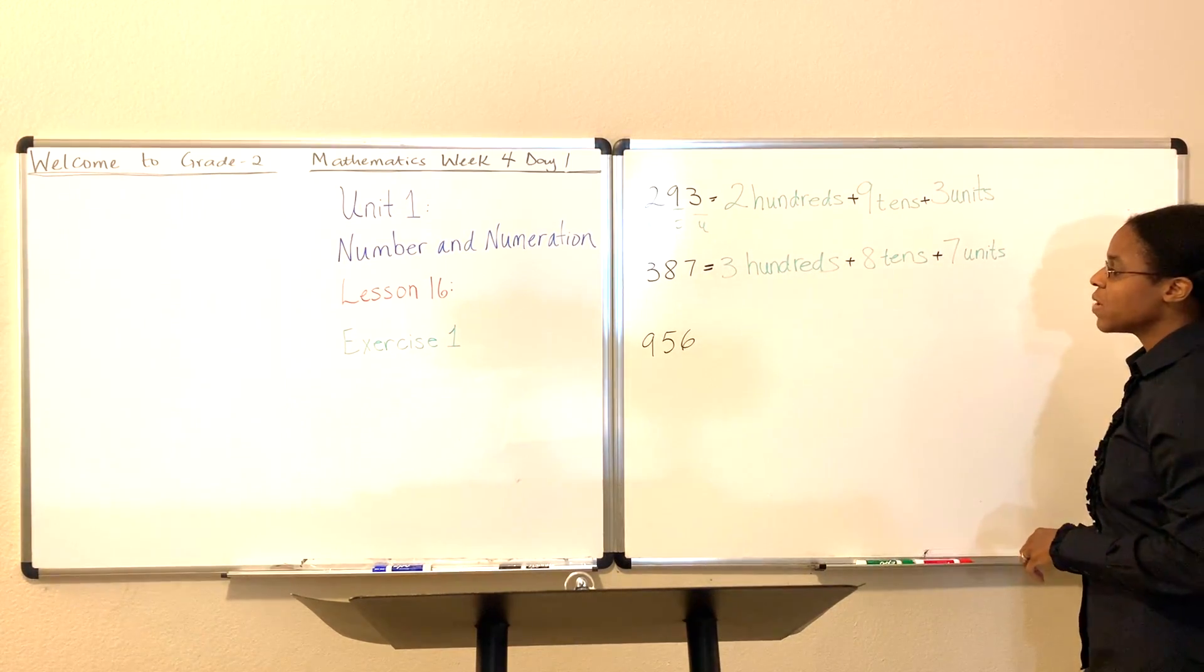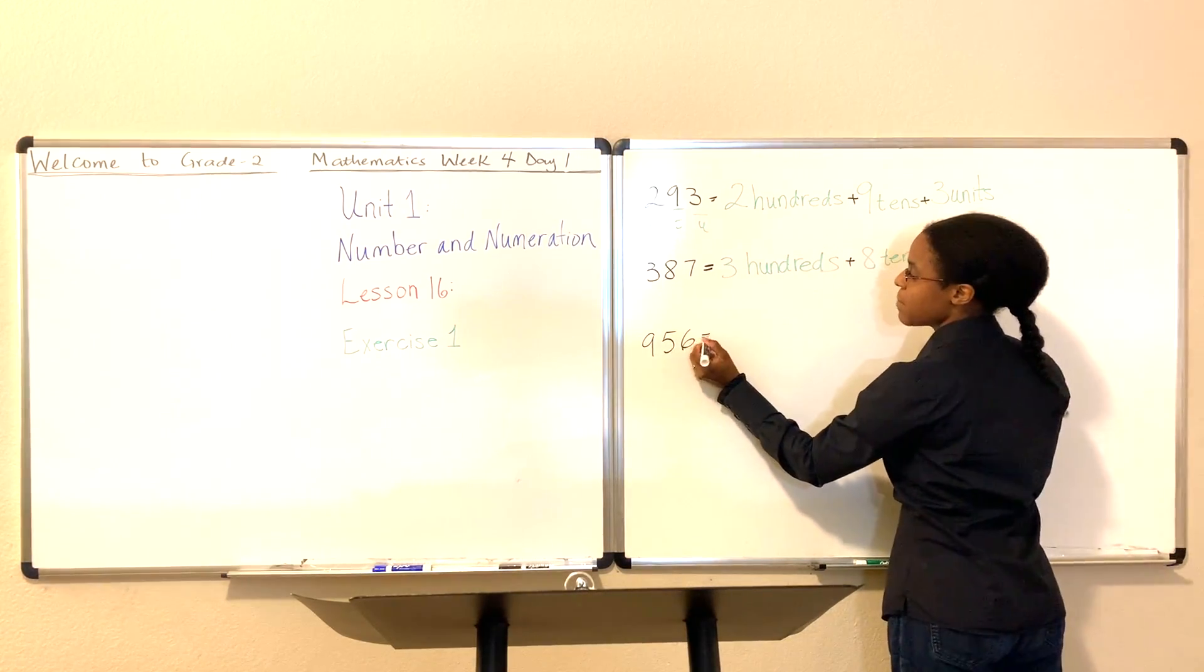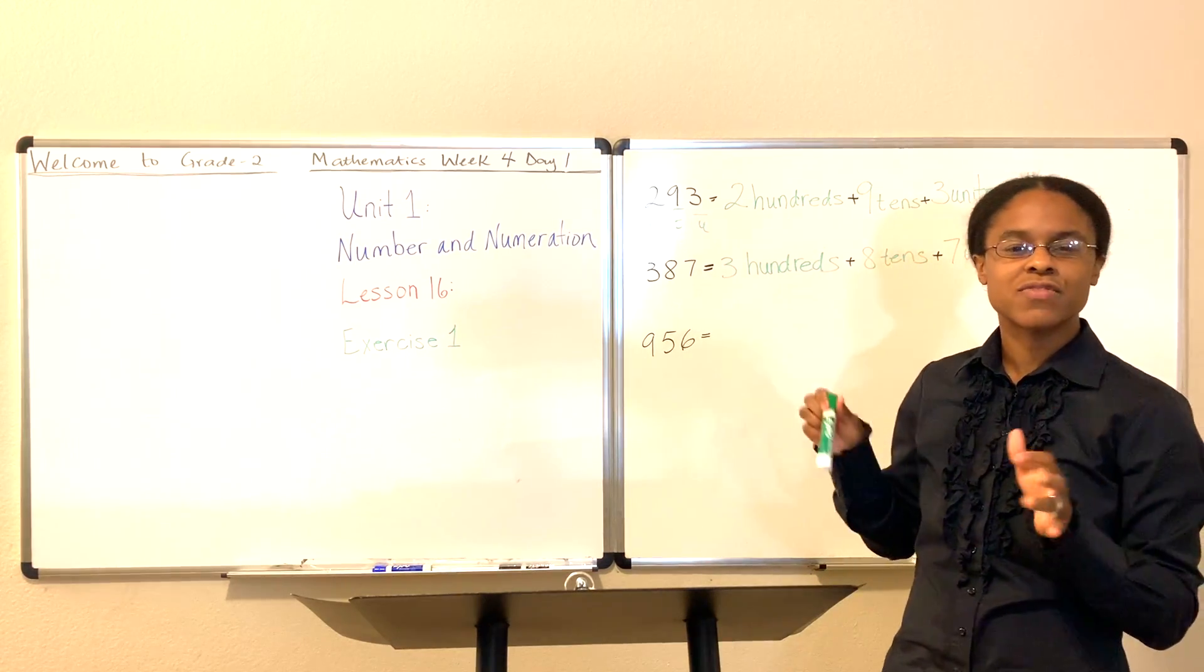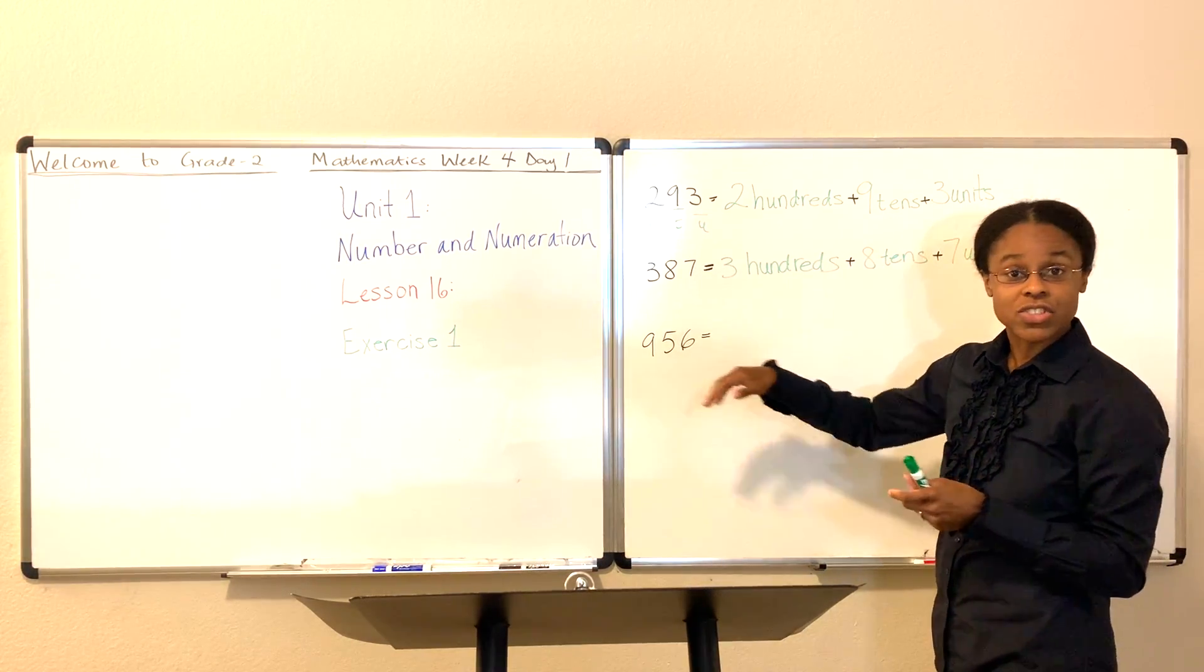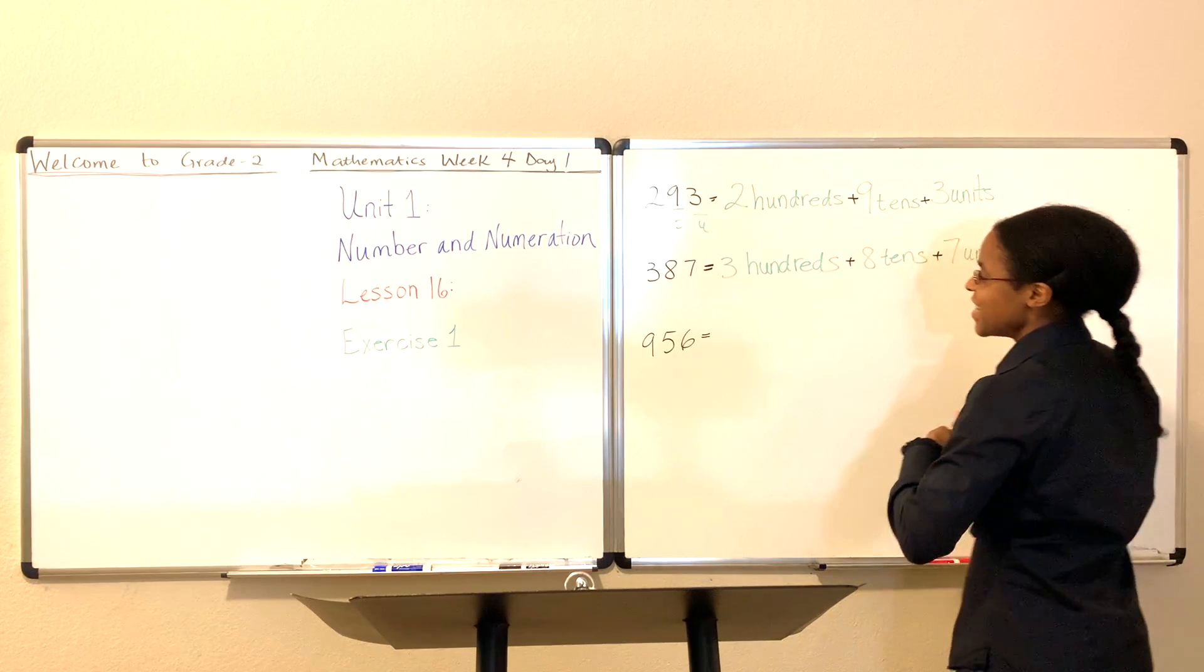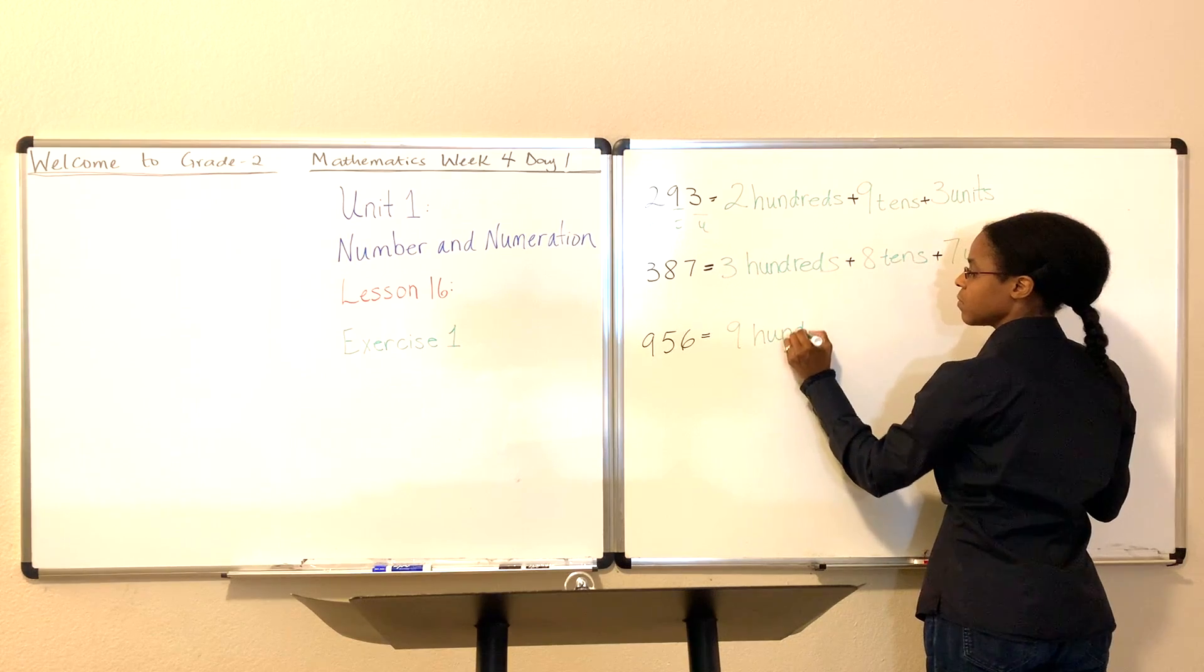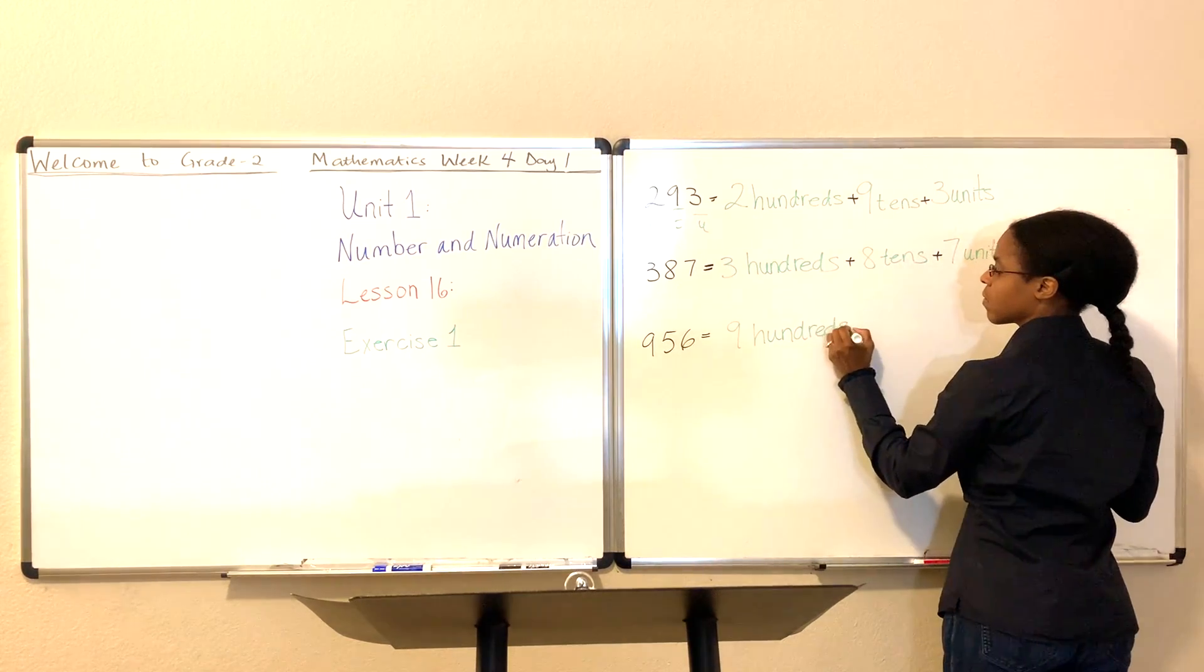Okay, let's look at the final ones for this lesson. We have the number 956. How many hundreds do we have in the number 956? Well, we have nine hundreds. That's why we say nine hundred. 956 is nine hundreds.